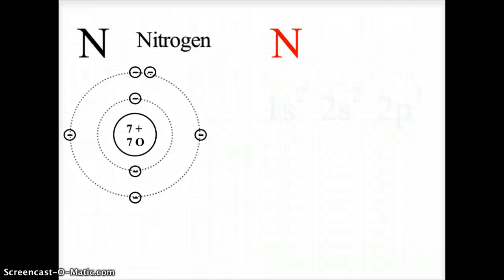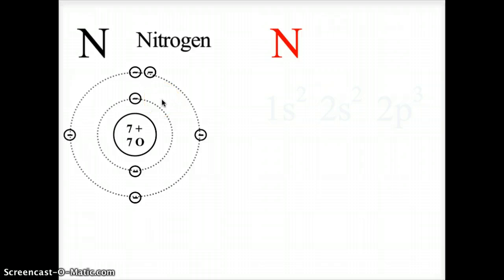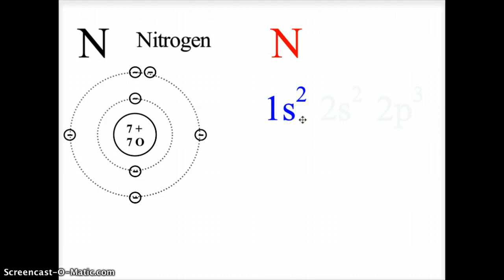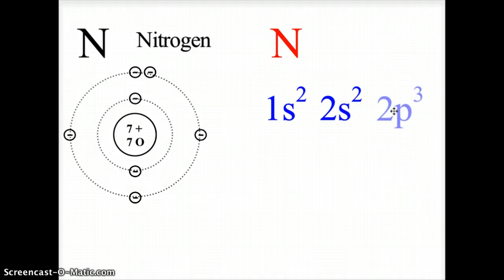Let's do nitrogen. Nitrogen is atomic number seven — seven protons and seven electrons in its neutral state. It has two electrons in the first shell and five in the second shell. The first shell is represented by 1s2. The second shell includes 2s2 and 2p3, because nitrogen is in the third column of the P block.